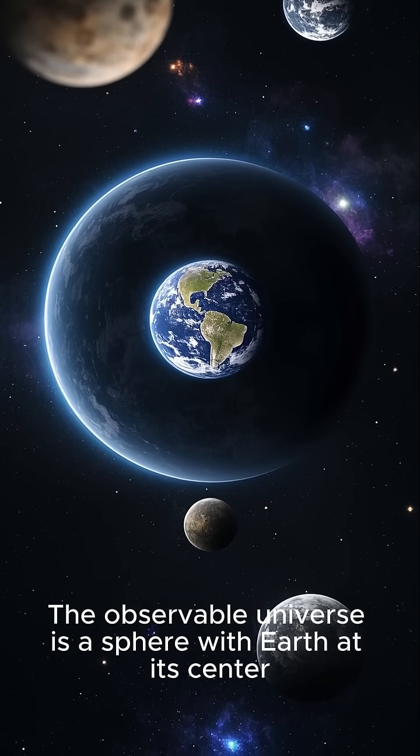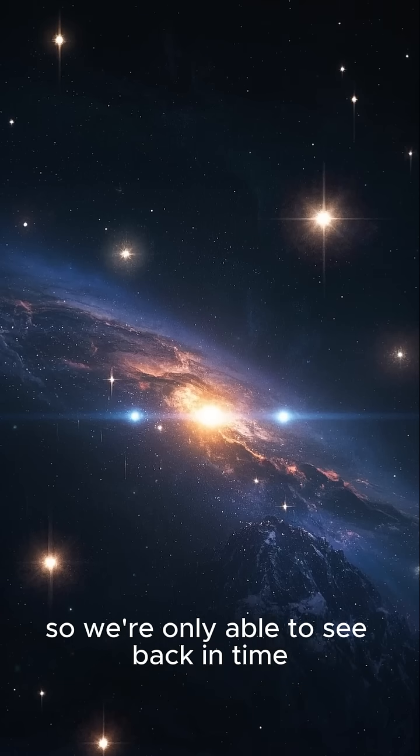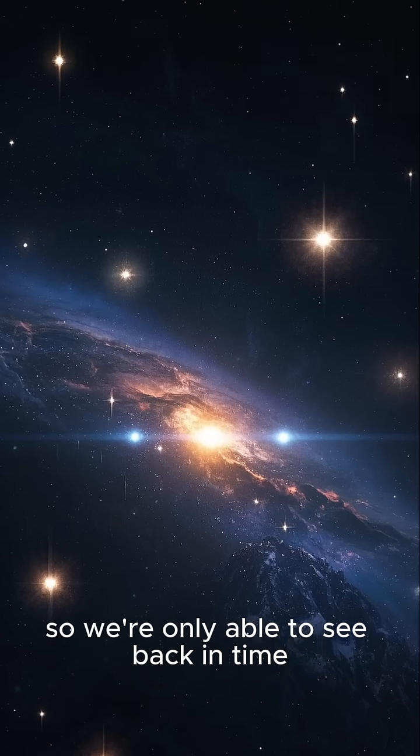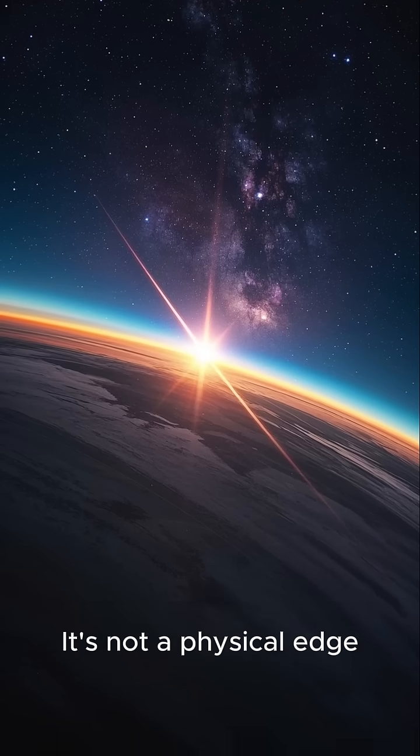The light from distant galaxies takes billions of years to reach us, so we're only able to see back in time. The radius of this sphere is called the cosmic horizon. It's not a physical edge, but a boundary defined by the speed of light.